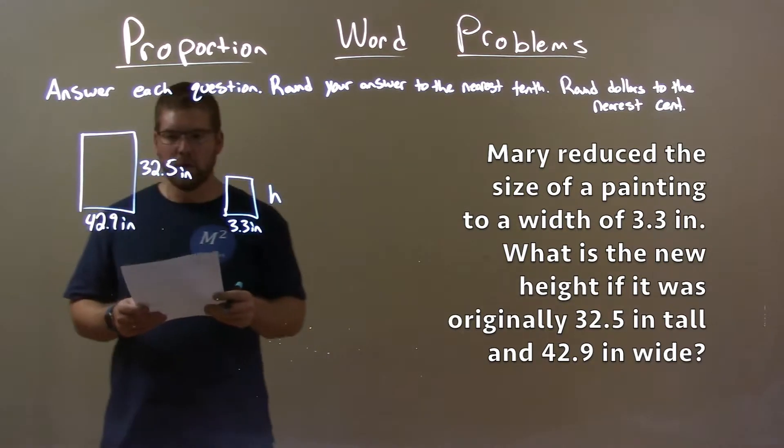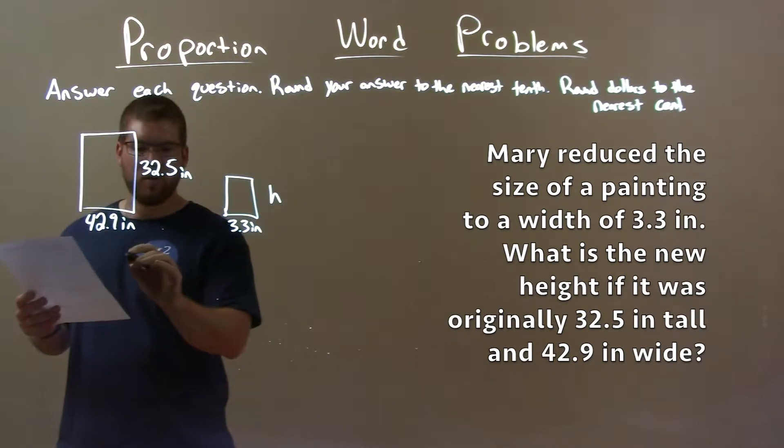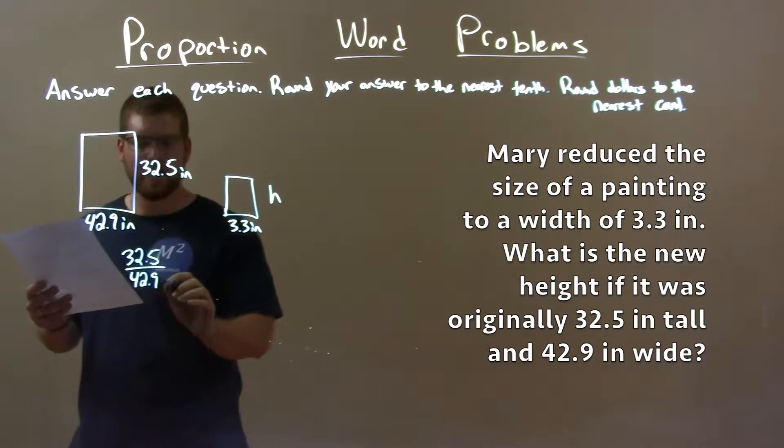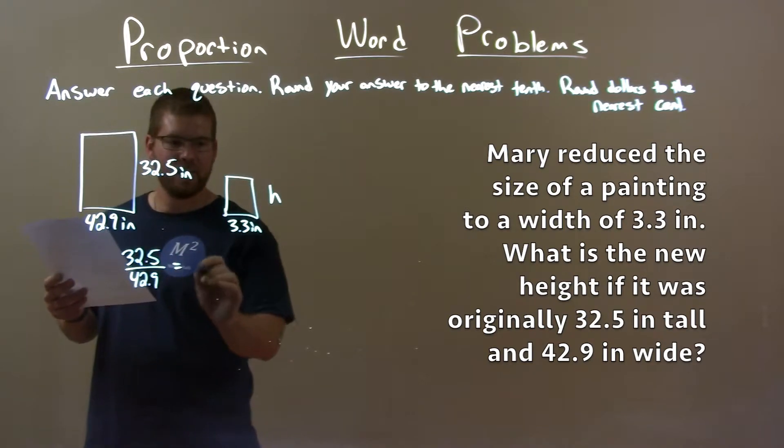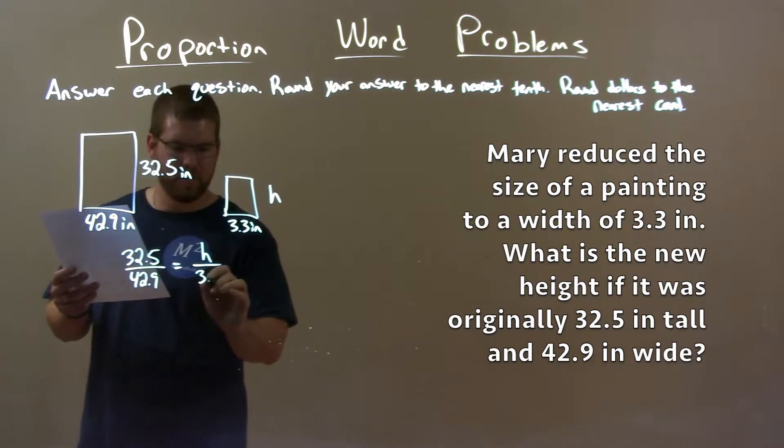So we can set up a proportion here for that. The height to width, so 32.5 inches for every 42.9 inches in the width is equal to our height of the new rectangle and its current width of the new rectangle, 3.3.